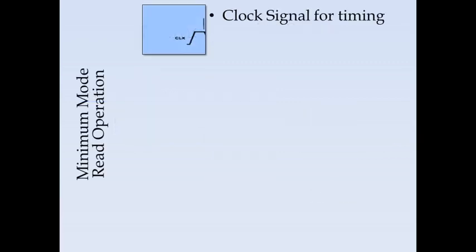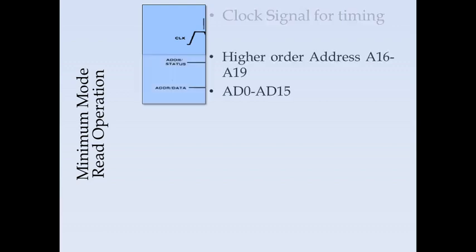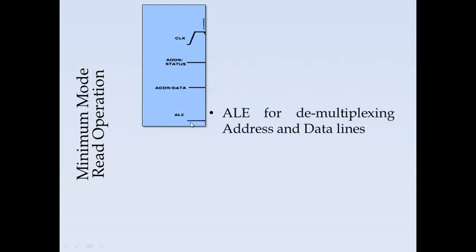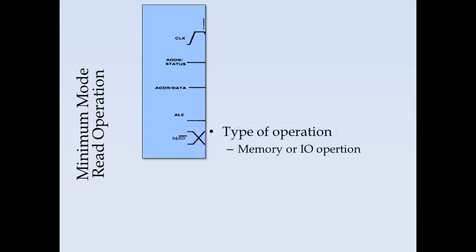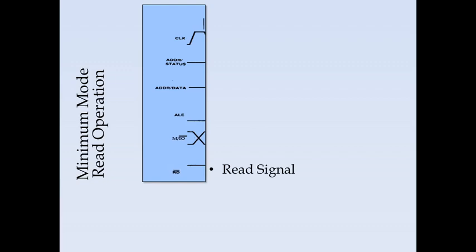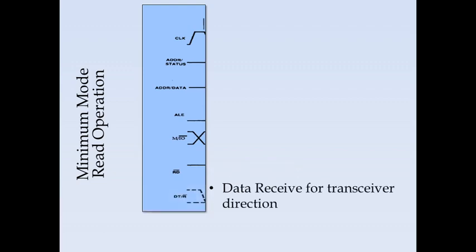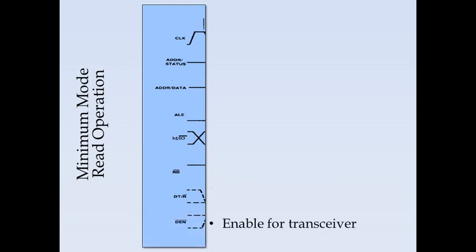The signals involved in minimum mode read are: the clock signal for timing, the multiplexed address and data lines, the higher-order address lines, ALE for the latch, M/IO to indicate memory or I/O operation (high for memory, low for I/O), the active-low READ signal, DT/R-bar for transceiver direction (active low for receive), and DEN to enable the transceivers.